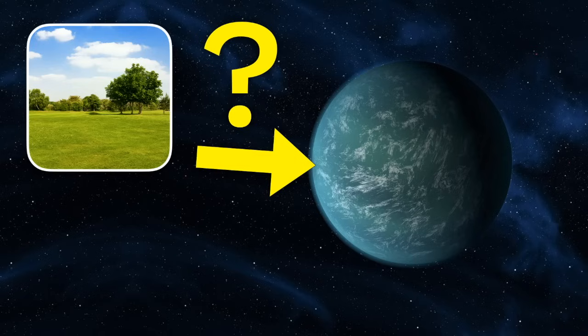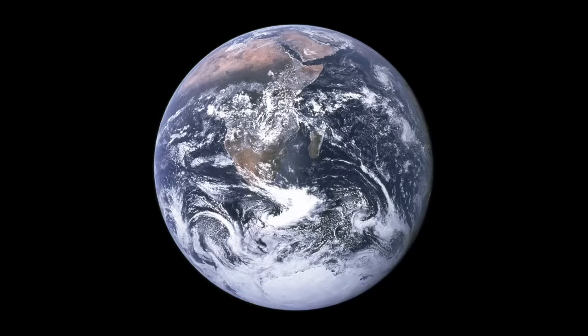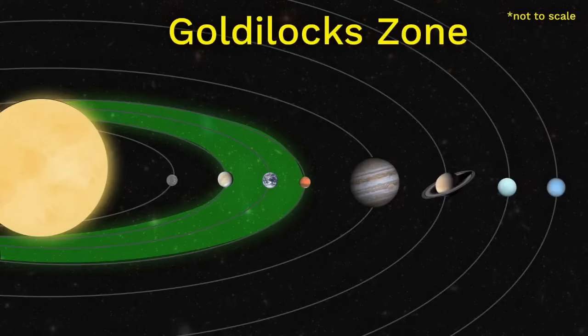So in summary, so far scientists have only found life on one planet in our solar system, the Earth. Earth is in the Goldilocks zone of our Sun. That's where it's not too hot or too cold. Scientists are now searching for Goldilocks zones around other stars to try to find life elsewhere in the universe.